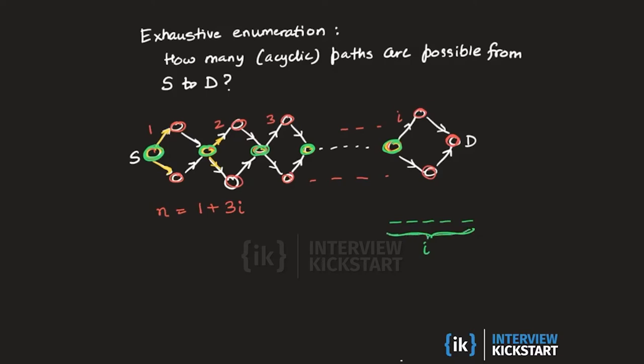At the first fork we have two choices. At the second fork we have two options. At the third fork we have two options and so on. So there are 2 raised to the power I different ways to make this sequence of I choices. And each sequence of I choices corresponds to a unique path from S to D, which means the total number of paths from S to D is going to be 2 raised to the power I.